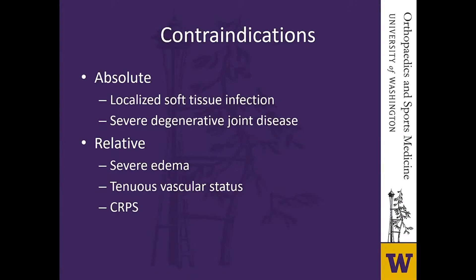Absolute contraindications for ankle arthroscopy include localized soft tissue infection — with concern for seeding the joint and causing septic arthritis — and severe degenerative joint disease where there isn't enough joint space or range of motion to properly assess the joint. Relative contraindications include severe edema making skin incision or closure difficult, tenuous vascular status, and complex regional pain syndrome, which has been shown to result in an increased post-operative complication rate.